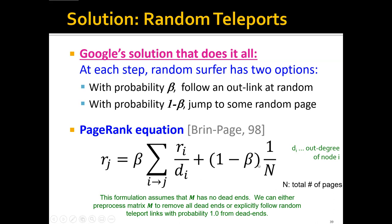So no matter what happens in the first term, r_j is at least (1 minus beta) times 1 over N, and N here is the number of total pages. So we can see that this is actually a weighted average, and the first term has weight beta and the second term has weight 1 minus beta.